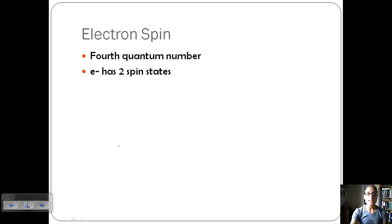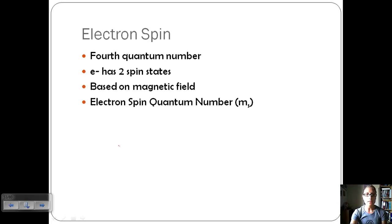It basically says that an electron has two spin states, and it's based on the magnetic field. The electron spin quantum number is M sub S. It can have two values, either positive one-half or negative one-half, meaning it's going to spin clockwise or counterclockwise.